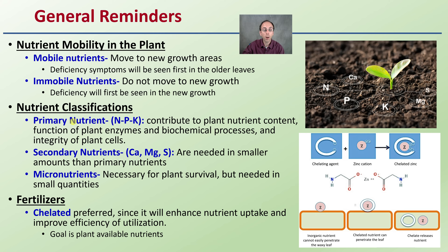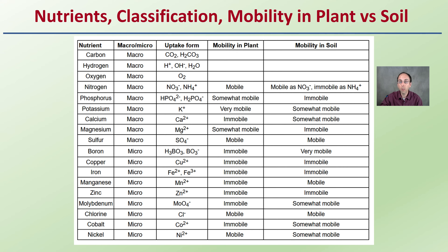Our primary nutrients are nitrogen, phosphorus, and potassium — they contribute to plant nutrient content, enzyme function, biochemical processes, and cell integrity. Secondary nutrients are calcium, magnesium, and sulfur, needed in smaller amounts. Micronutrients are necessary for plant survival but required in very small quantities. Chelated fertilizers are preferred as they enhance nutrient uptake and efficiency — if you can find a chelated form of a nutrient, that is definitely the way to go.